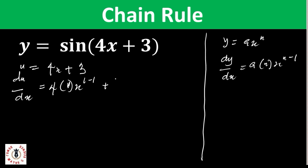The constant 3 — we treat it as 3·x^0, and since 0 multiplies 3 it becomes 0. So I'm left with du/dx = 4. That's 4·x^(1-1) = 4·x^0 = 4·1 = 4.